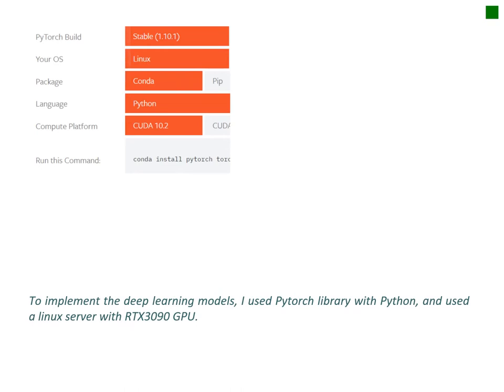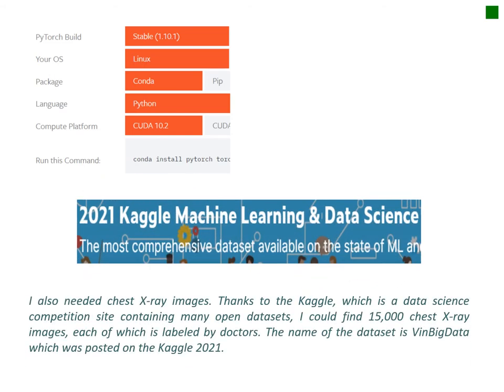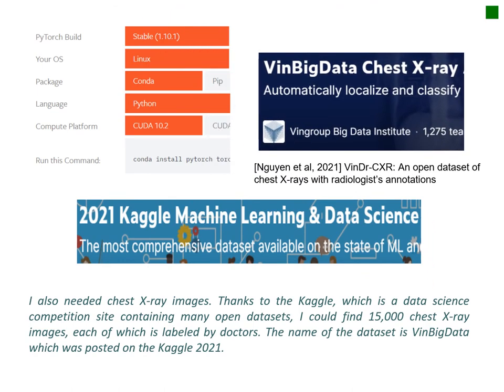To implement the deep learning models, I used the PyTorch library with PySyn and used a Linux server with an RTX 3090 GPU. I also needed chest x-ray images. Thanks to Kaggle, which is a data science competition site containing many open datasets, I could find 15,000 chest x-ray images, each of which is labeled by doctors. The name of the dataset is VinBigData, which was posted on Kaggle in 2021.